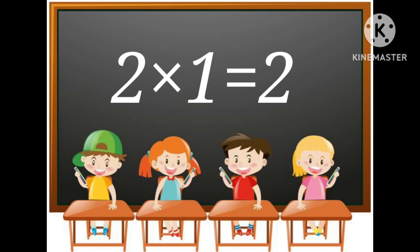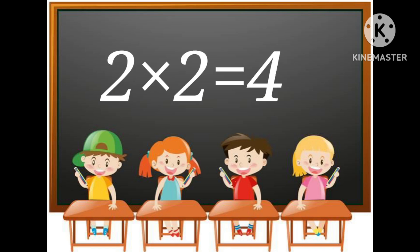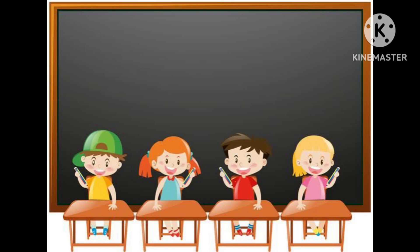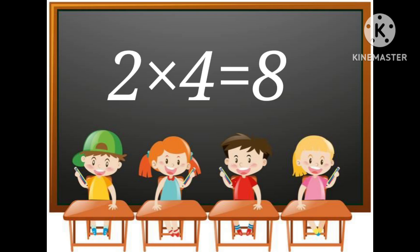2 multiplied by 1 is equal to 2. 2 multiplied by 2 is equal to 4. 2 multiplied by 3 is equal to 6. 2 multiplied by 4 is equal to 8.